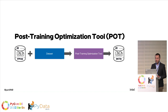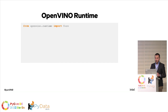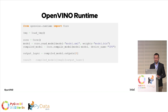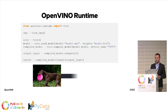Step three: use OpenVINO Runtime. Import OpenVINO, load your data — image, text, audio, anything. Initialize OpenVINO, read the model from the IR files, compile the model for a specific device (in this case CPU), get the handle to the output layer, and run inference — giving your input and receiving the output. In the case of image classification, this goes from raw input to classified output in just seven lines of code.